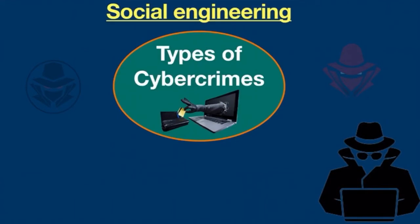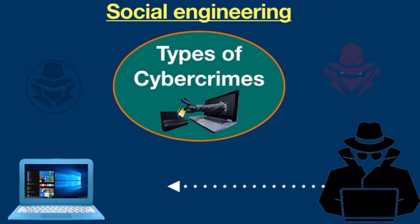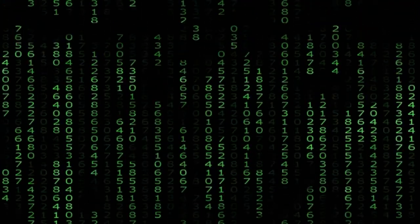Social engineering: cyber criminals find out whatever they can about you on the internet and then try to add you as a friend on social accounts. They then make direct contact with you, usually by phone call or email. They want to gain your confidence by pretending to be a friend or customer service agent so you will give them secret information — typically a password or bank details.